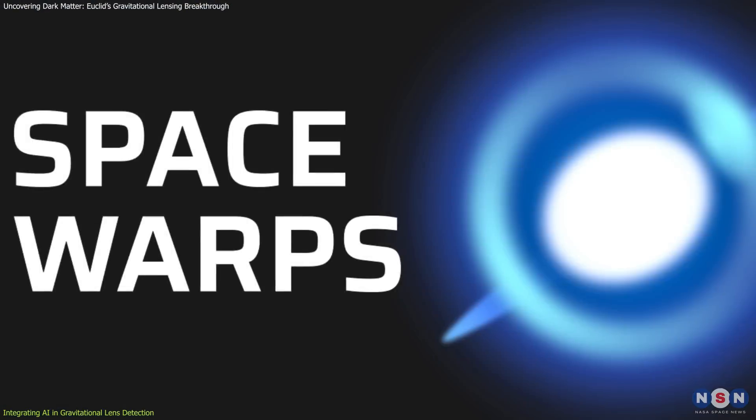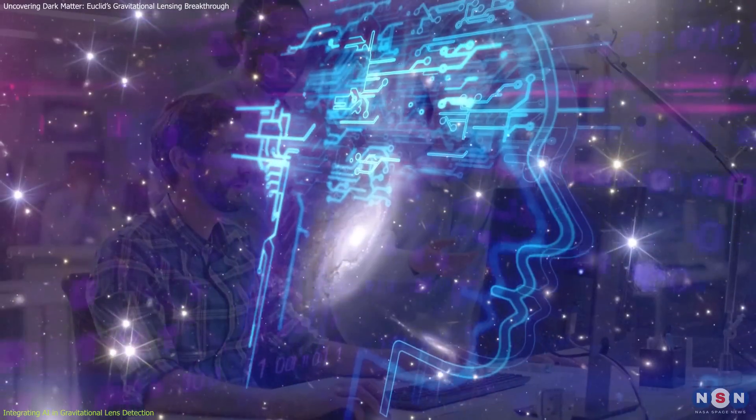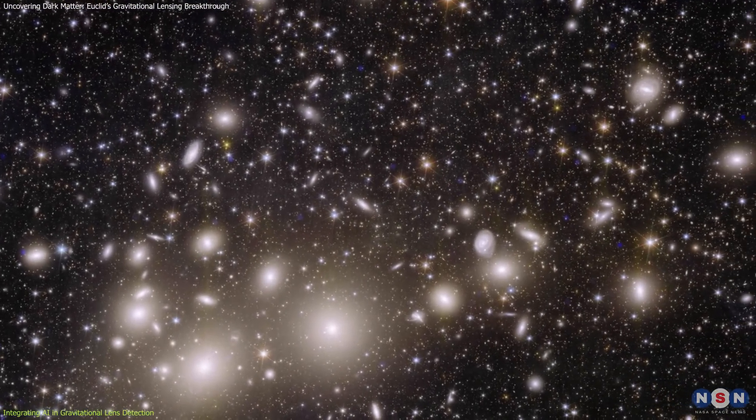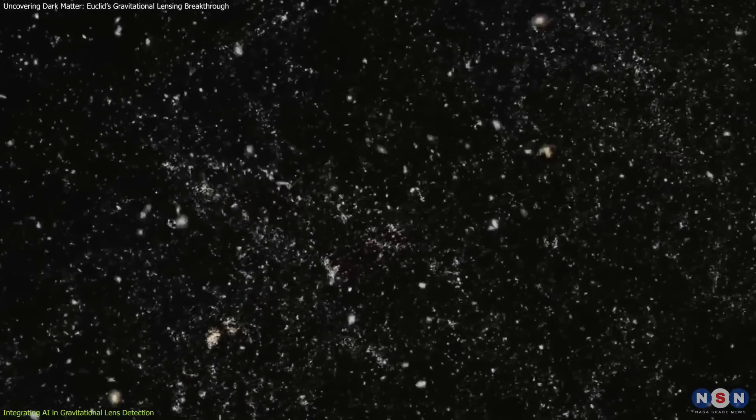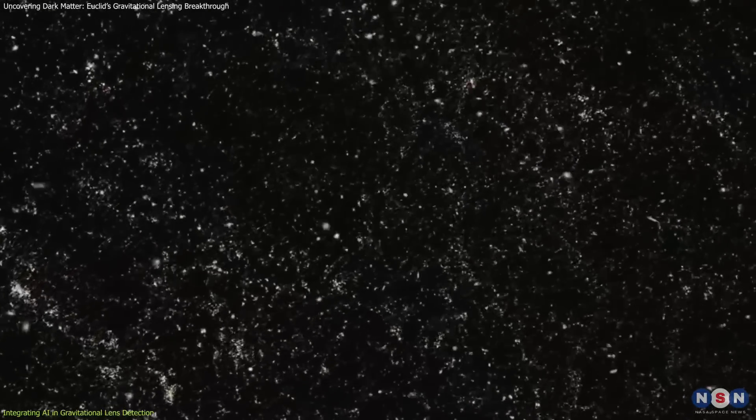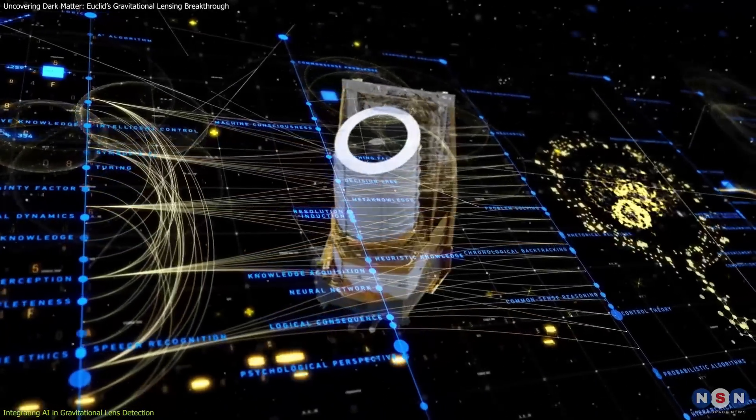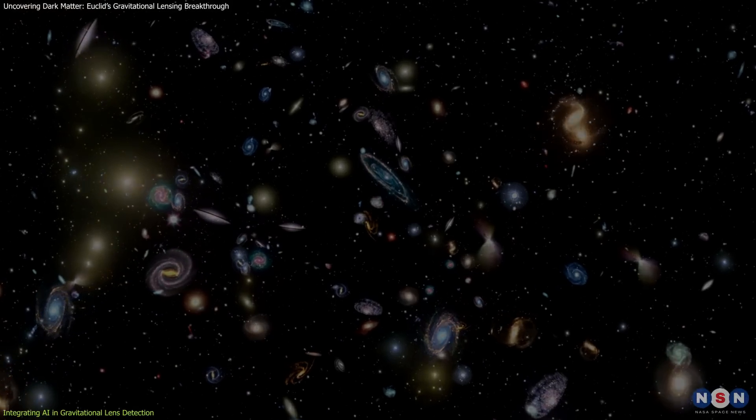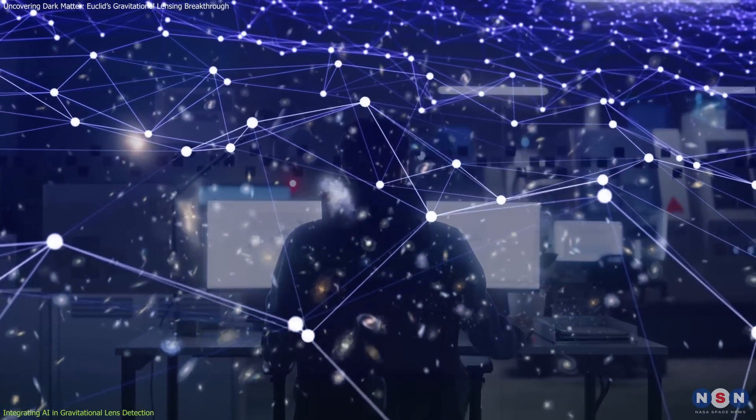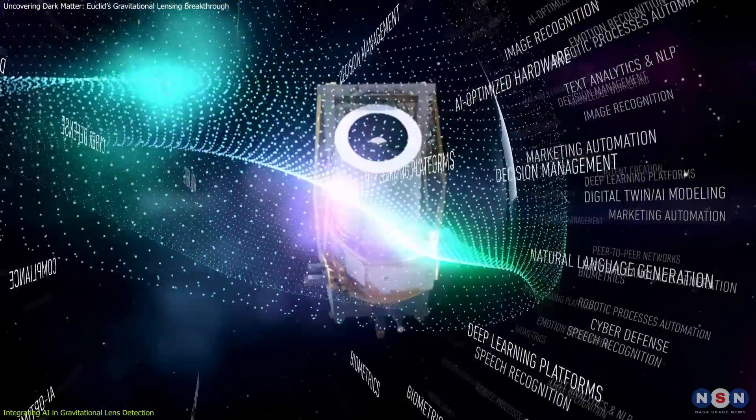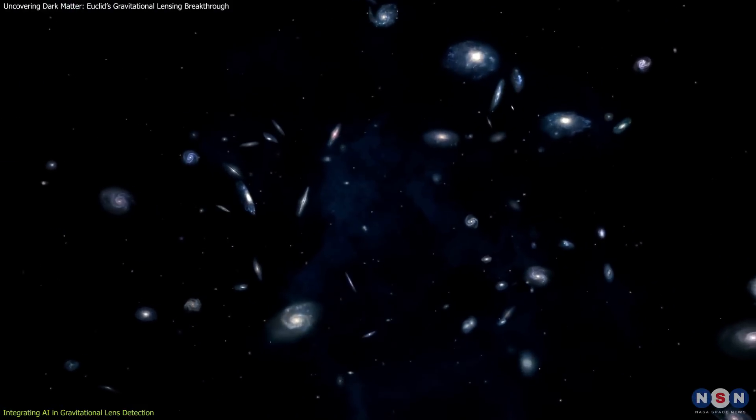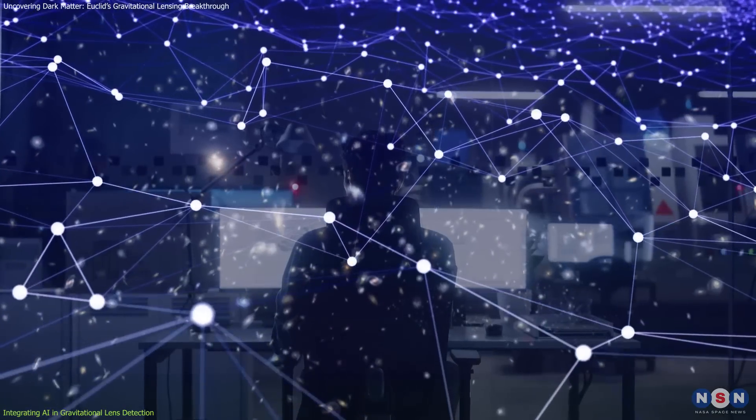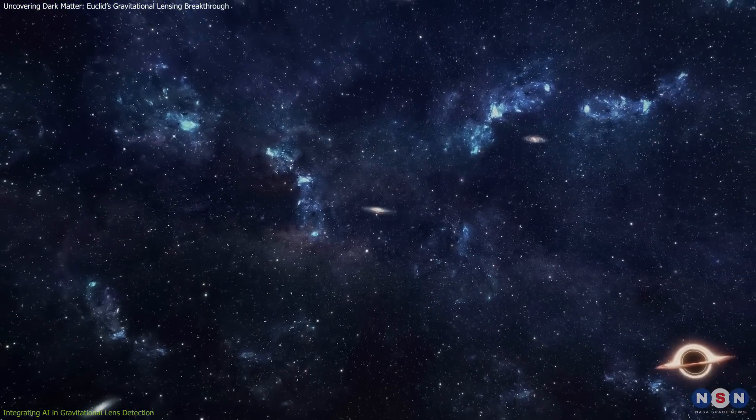Citizen science initiatives like Space Warps play a complementary role, engaging the public in validating AI findings. By involving non-experts in the inspection of flagged images, these projects not only enhance the detection process, but also foster public interest in scientific discovery. The integration of AI in the Euclid mission exemplifies the transformative potential of technology in modern astronomy. While human expertise remains crucial for interpreting complex phenomena, AI accelerates the pace of discovery and enables researchers to focus on the broader implications of their findings. This synergy between machine learning and human ingenuity is paving the way for a deeper understanding of the universe.